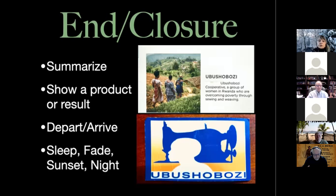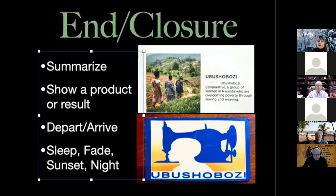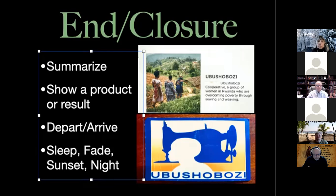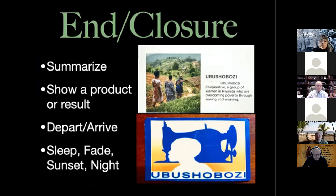The end or closure of your story should summarize what you've been telling, or show a product or result, or an arrival or departure — these are all ways to show you're done. In my case, I have an encapsulating slide at the end showing the women in Rwanda with text explaining that this is a cooperative group of women overcoming poverty through sewing and weaving, plus a picture of the business card with the name Ubu Shibosi. I'll also have narration at the end including the words, 'Your kindness can make a difference,' because that's the whole point of this story.